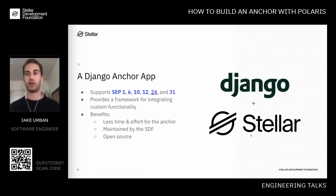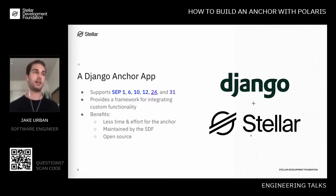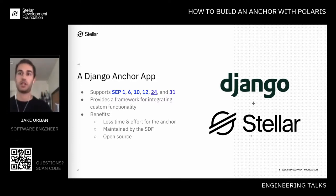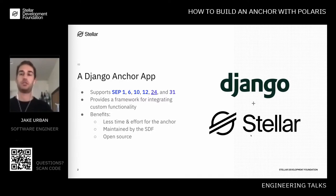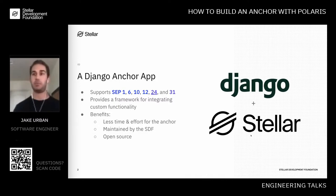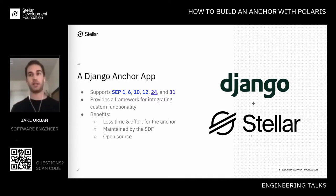If you know anything about Django — and hopefully you do, because I'm going to be going into Django code — Django is a framework that allows you to plug and play different applications within the project. Polaris is a reusable app that you can plug and play within Django applications, and it provides an API that developers can use to insert and customize the way the anchor server responds and handles information.